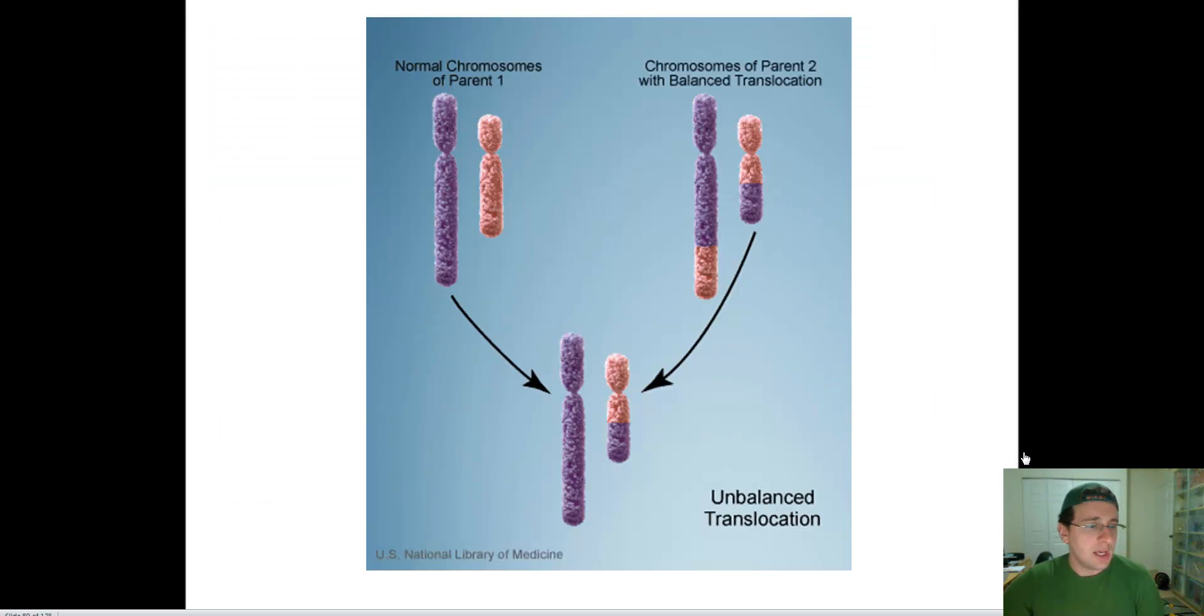Another example of translocation is what we call unbalanced translocation. In this example, the normal chromosomes and the chromosomes of a parent with a balanced translocation meet, and then you get something that looks like this. That means, for example, you're creating the fertilization. It's going to select one of these chromosomes, remember, to make a haploid cell. When you put those together, you meet someone who has a large chromosome versus someone who has a small version of them. This will be an unbalanced translocation where one chromosome is huge, the other chromosome is small.